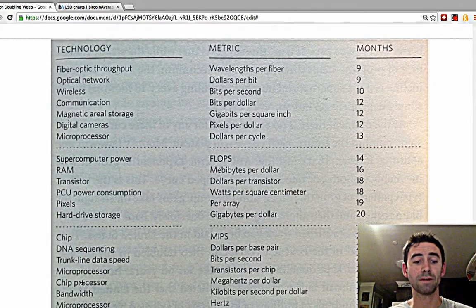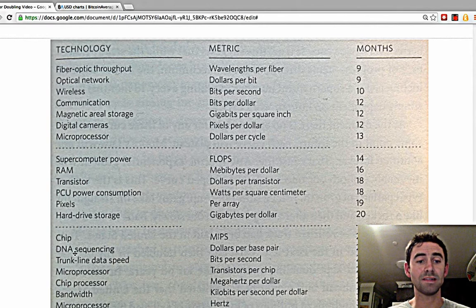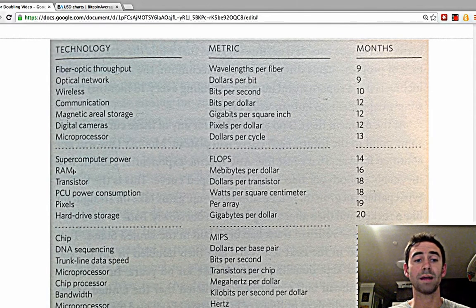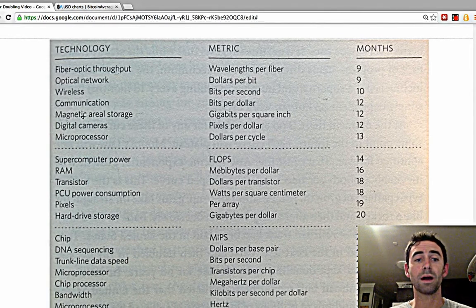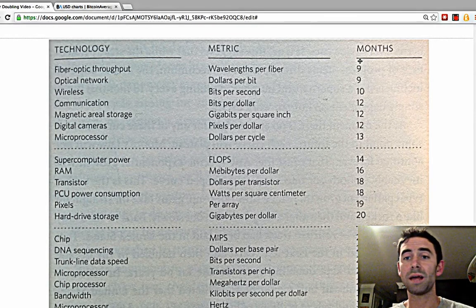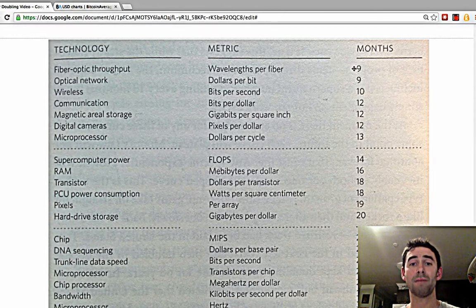Everything from bandwidth to DNA sequencing, pixels, random access memory, communication, fiber optic throughput doubles amazingly every nine months.